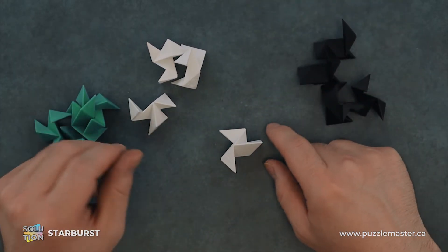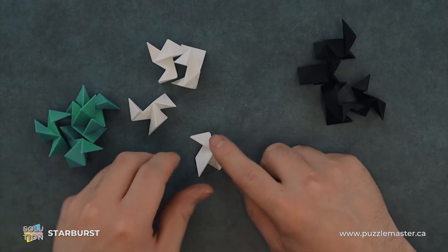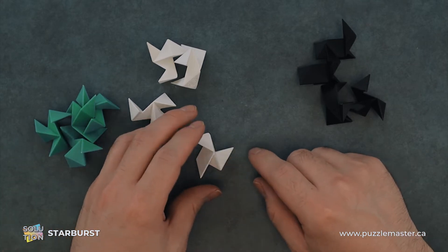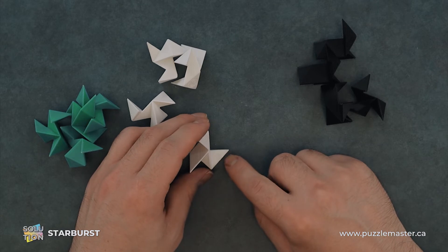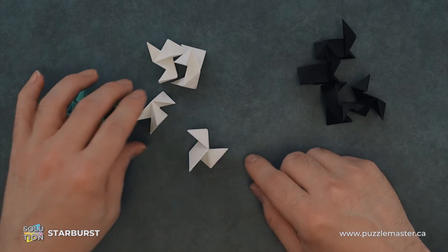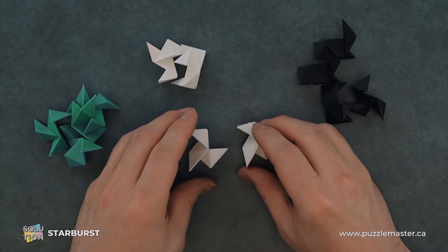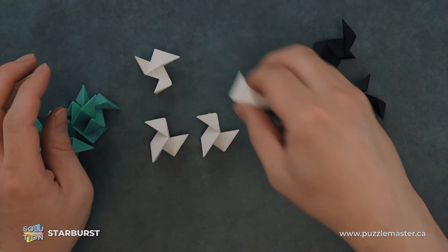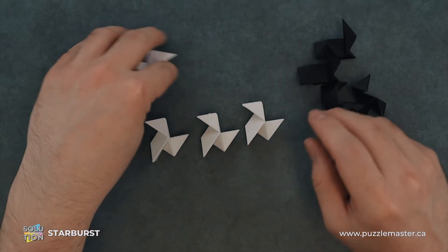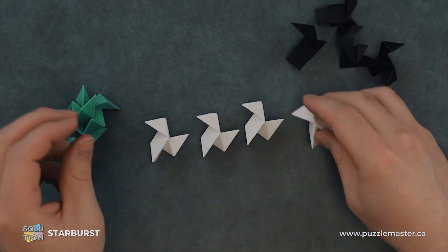Now we will set our pieces like this on the table. We have the little logo sticking up and we have this little fin here. And we'll arrange all the black and white pieces like so.